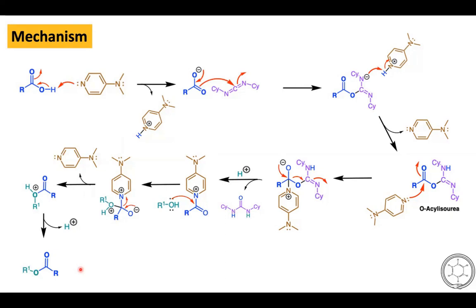There are two important points about this reaction mechanism. First, DMAP acts as an acyl transfer agent. Second, DMAP is a stronger nucleophile than alcohol, which is why initially DMAP selectively reacts with the O-acyl isourea rather than the alcohol.